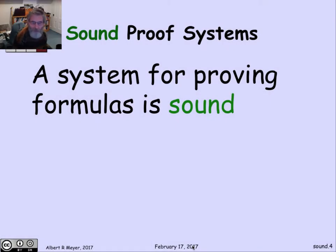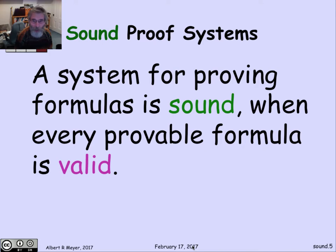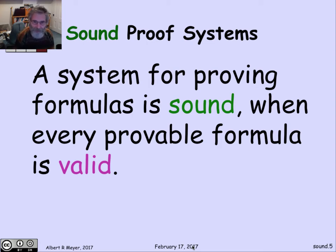A system for proving formulas is said to be sound — that's just a jargon word. It's pretty common to call a system sound when every provable formula is valid: every formula that the system claims is a theorem or can be proved by its rules is supposed to be a valid formula. Basically, if you have an unsound proof system, you'd throw it away, because you don't want a proof system proving stuff that can't be counted on. You'd hardly ever bother to mention that your proof system is sound, because that's taken for granted.